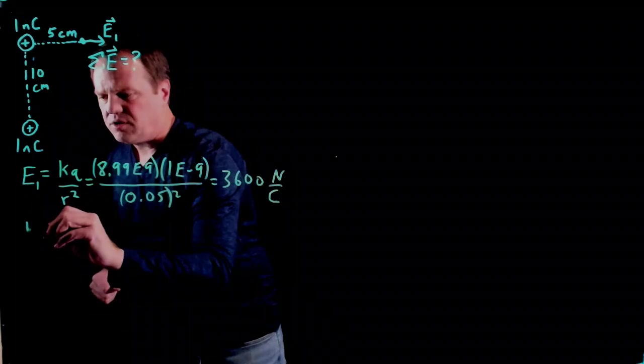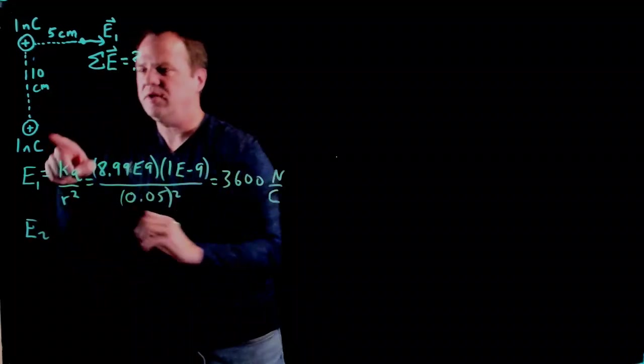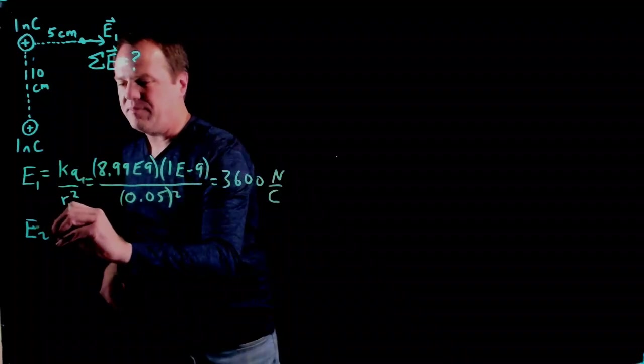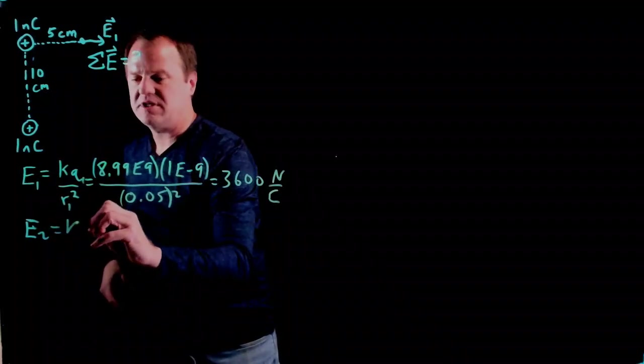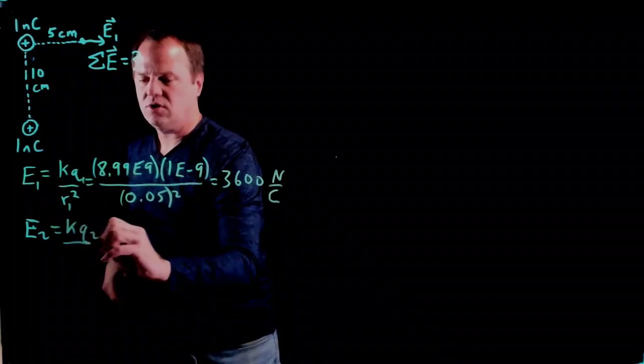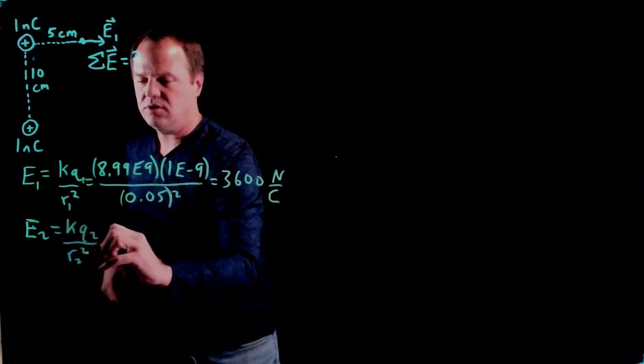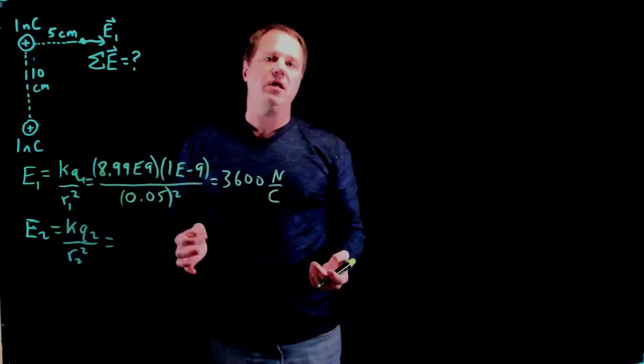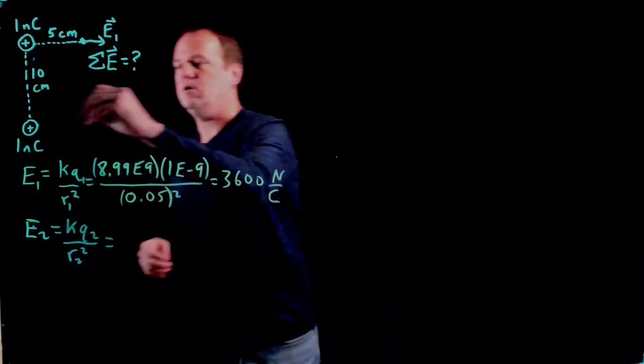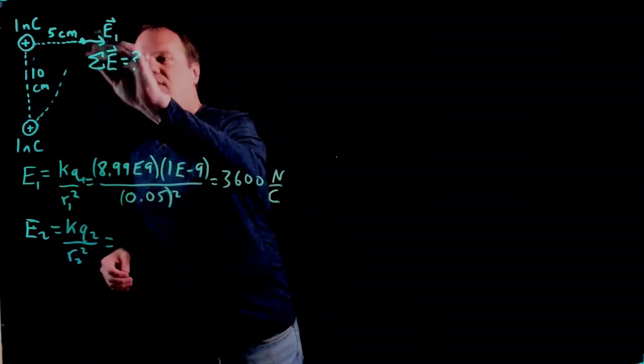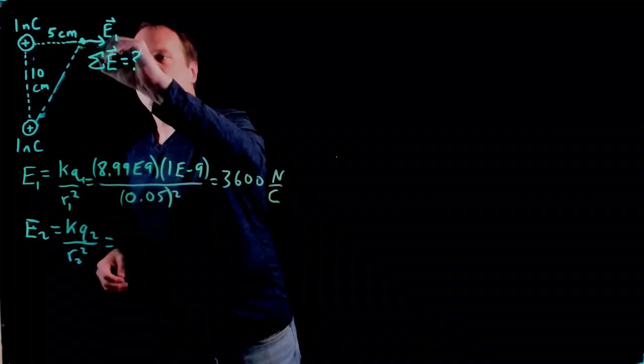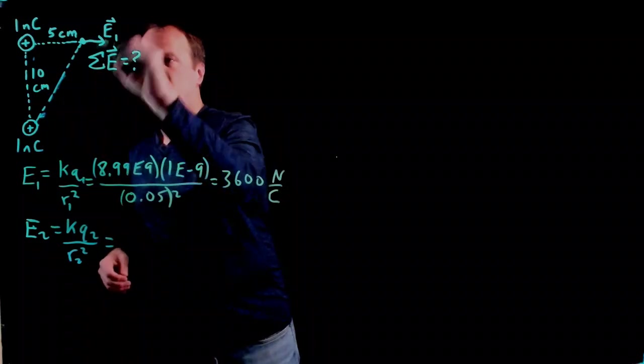So let's do electric field two, I'm calling this the second charged object. Second charge object, same formula, kq2 over r2 squared, just slightly different data. The distance, I do need to calculate using the Pythagorean theorem. That's something I assume you know how to do, so we need to determine this distance.